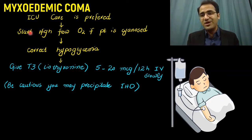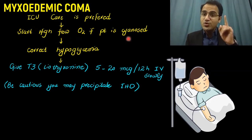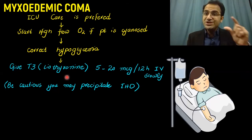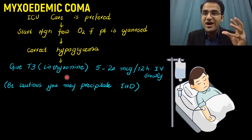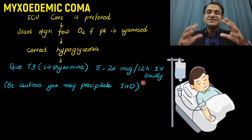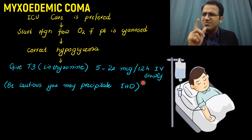Coming to the treatment of myxedema coma — since these patients present in such severe condition, ICU care is preferred. Start high-flow oxygen if the patient is cyanosed, and correct hypoglycemia as it is one of the features of hypothyroidism. Give T3 liothyronine, the active form of thyroid hormone — T3 is 4 to 5 times more active than T4. Give liothyronine 5 to 20 micrograms every 12 hours IV slowly. Be cautious: thyroid hormone increases cardiac contractility, and if the patient has pre-existing ischemic heart disease, this may precipitate an ischemic event.